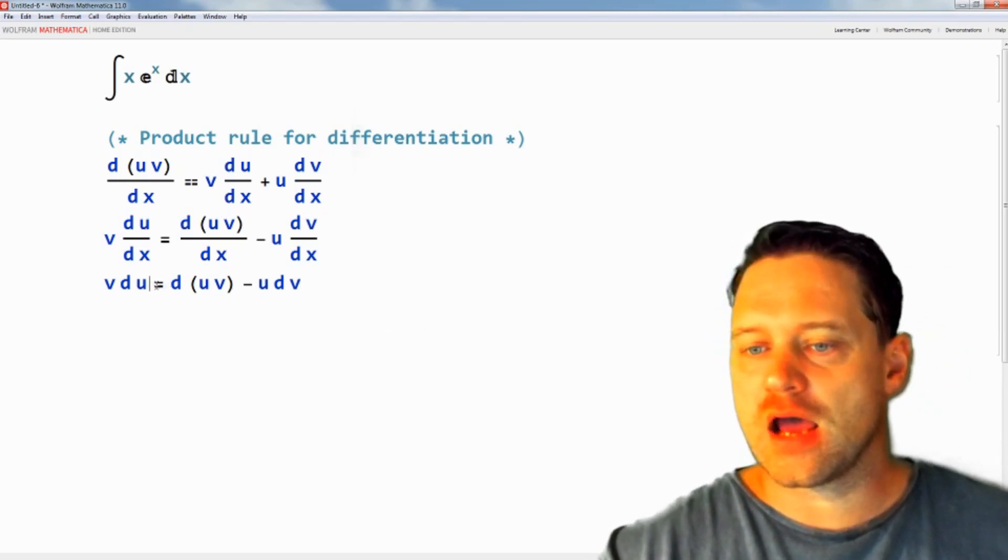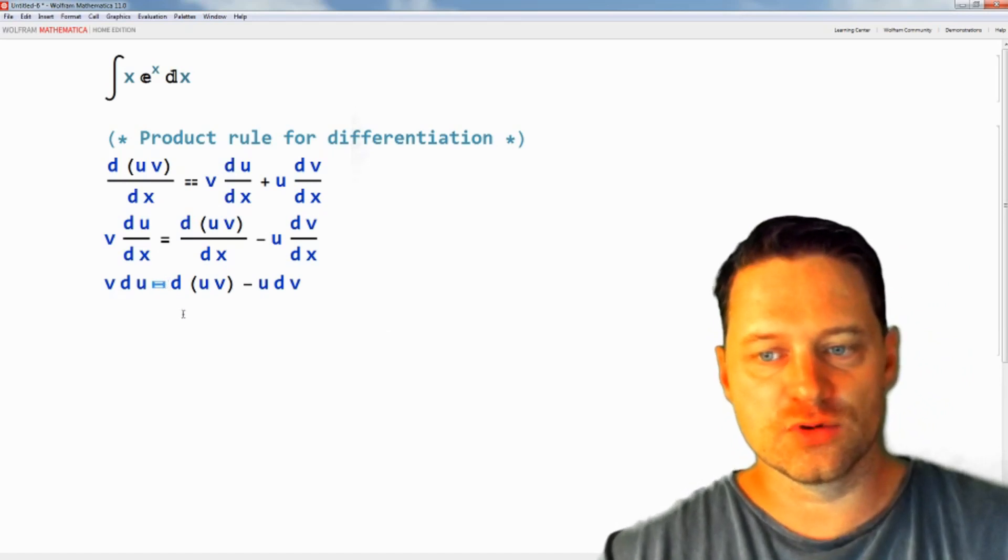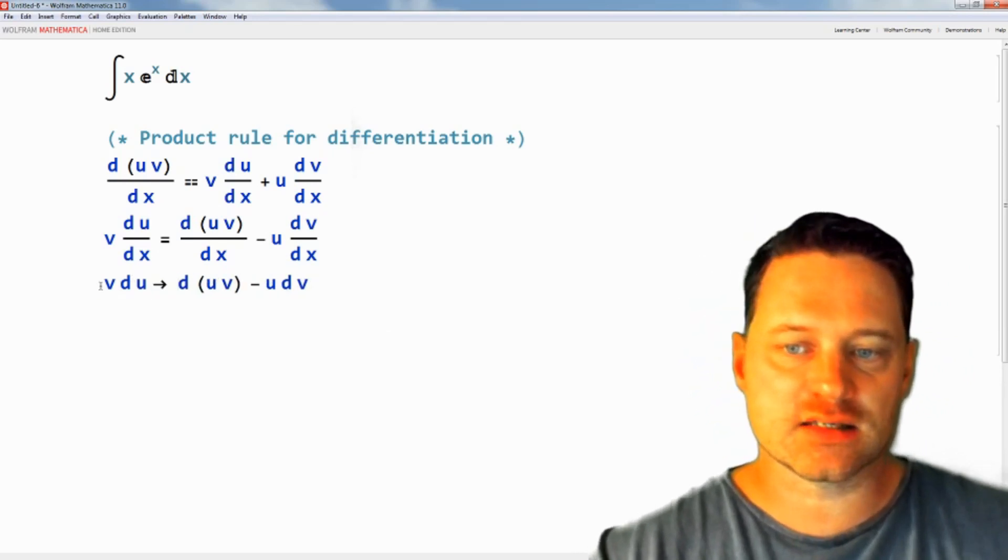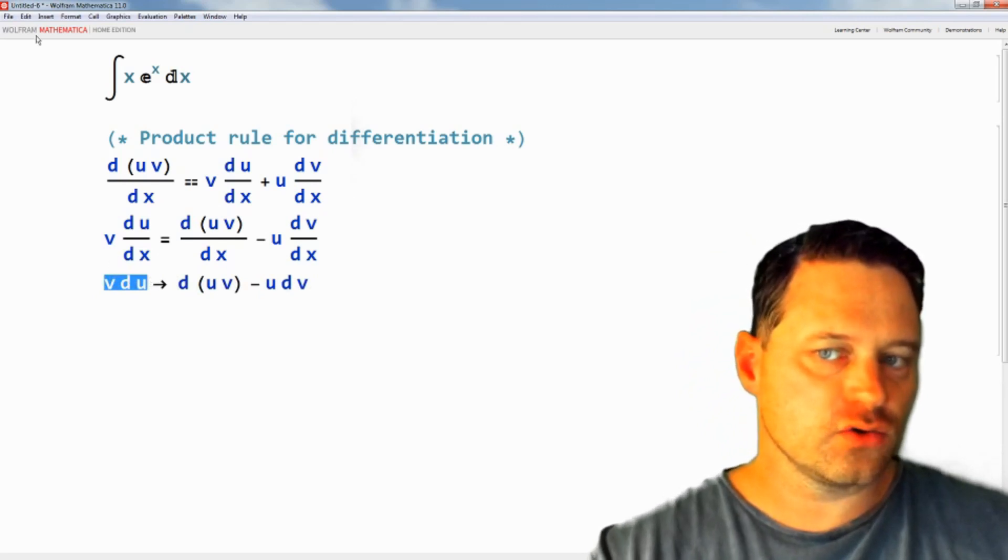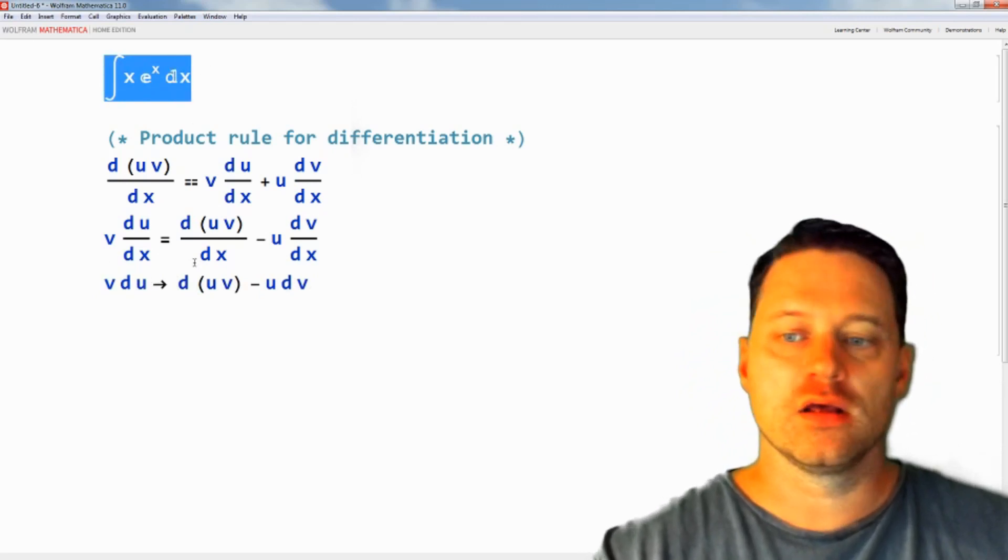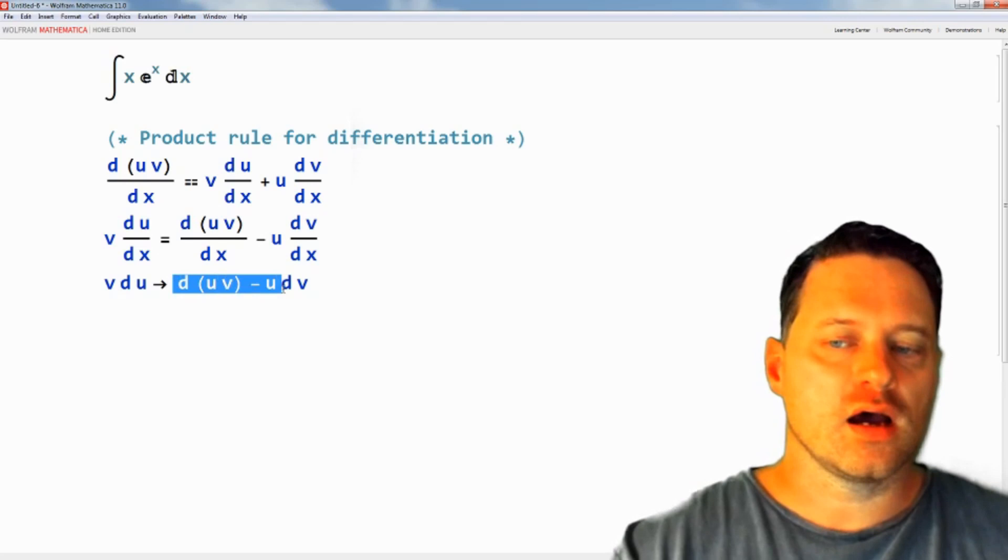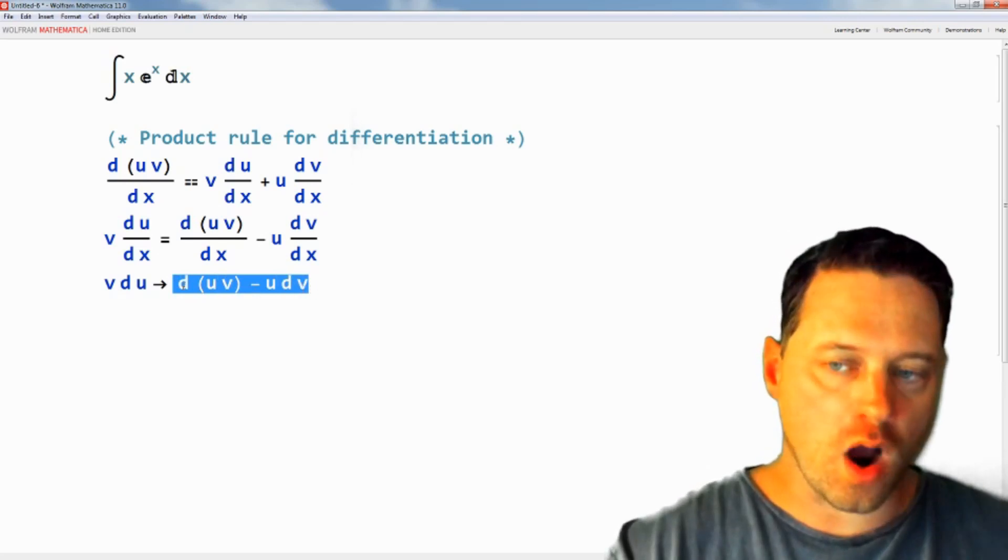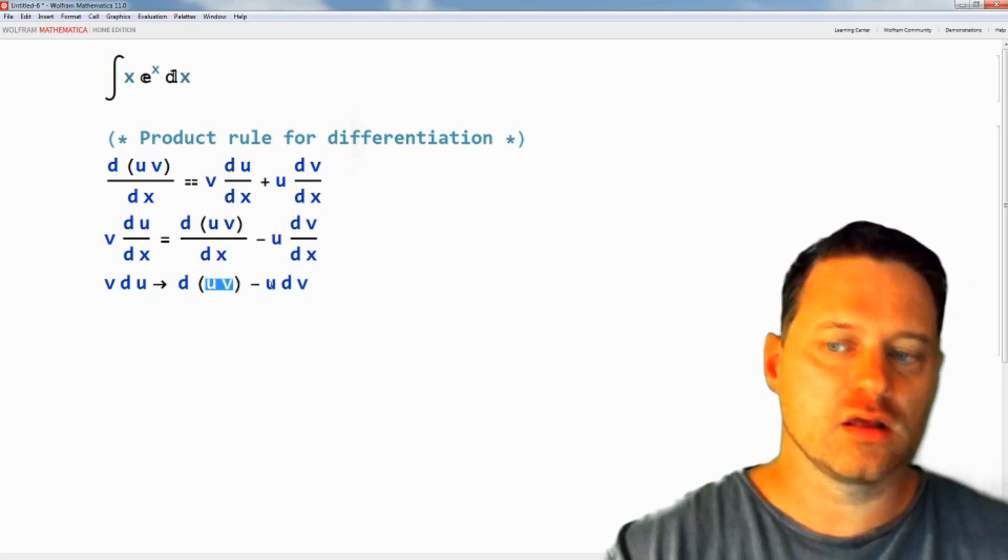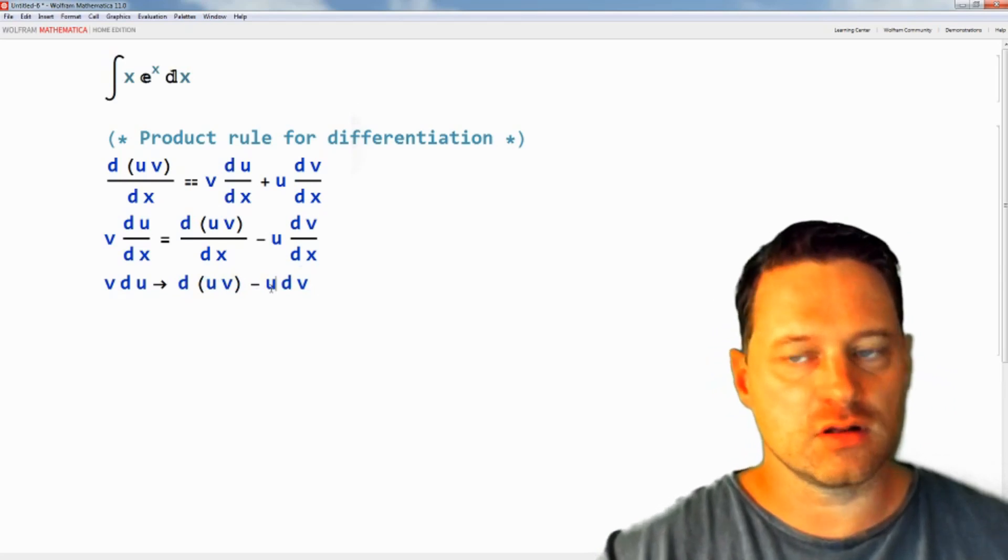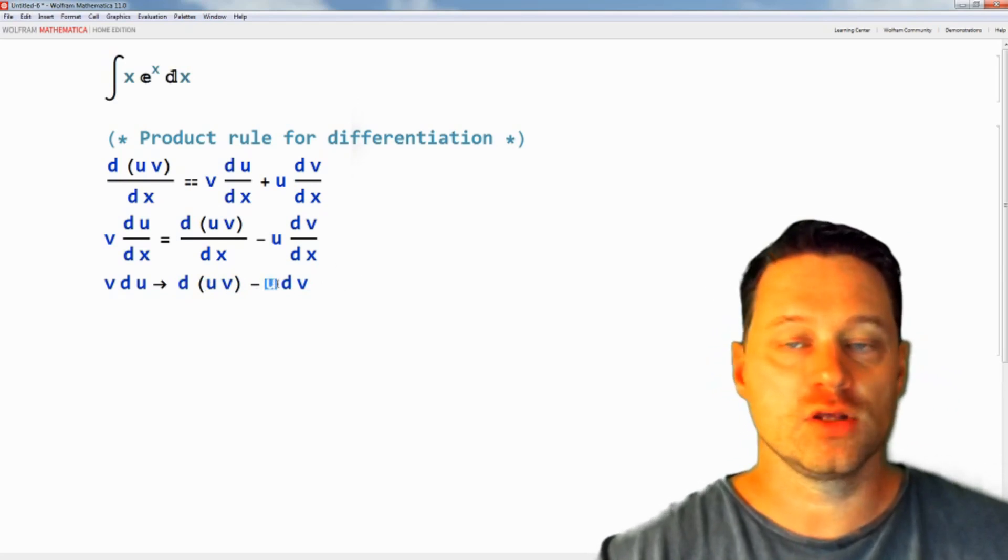Now this rule says that we are permitted to replace v du in an integral with the integral of 1 with respect to uv and then minus the integral of u with respect to v.